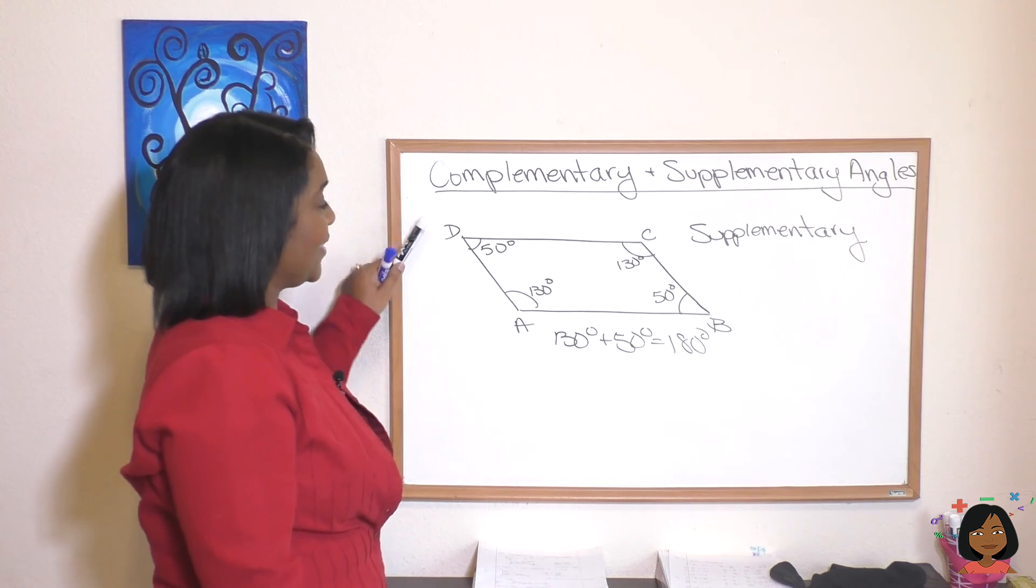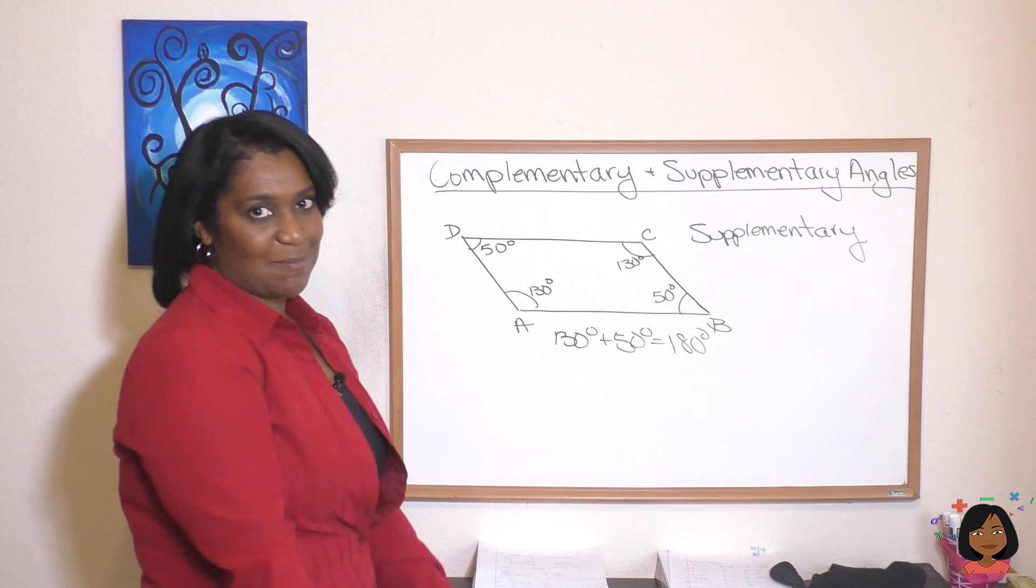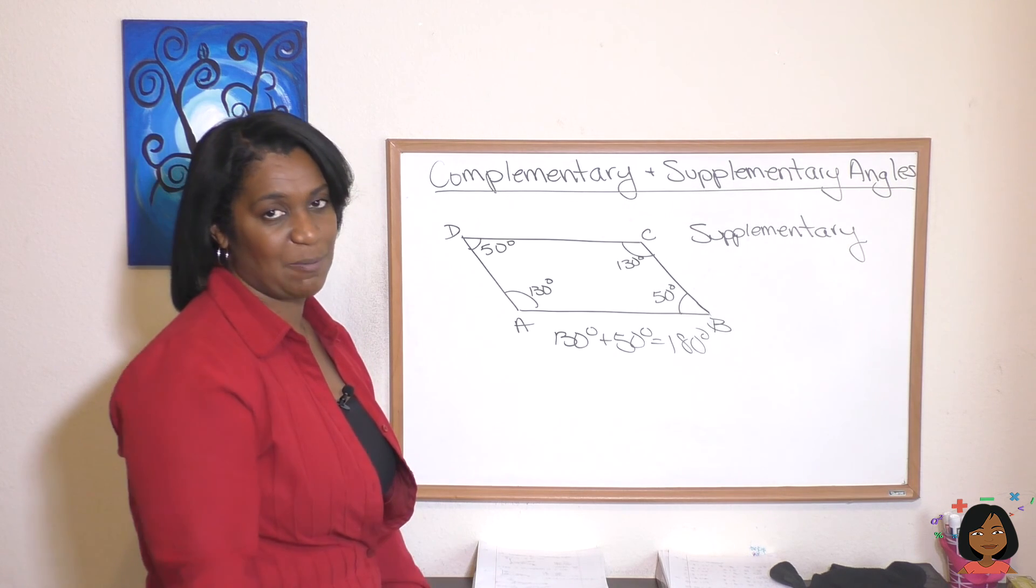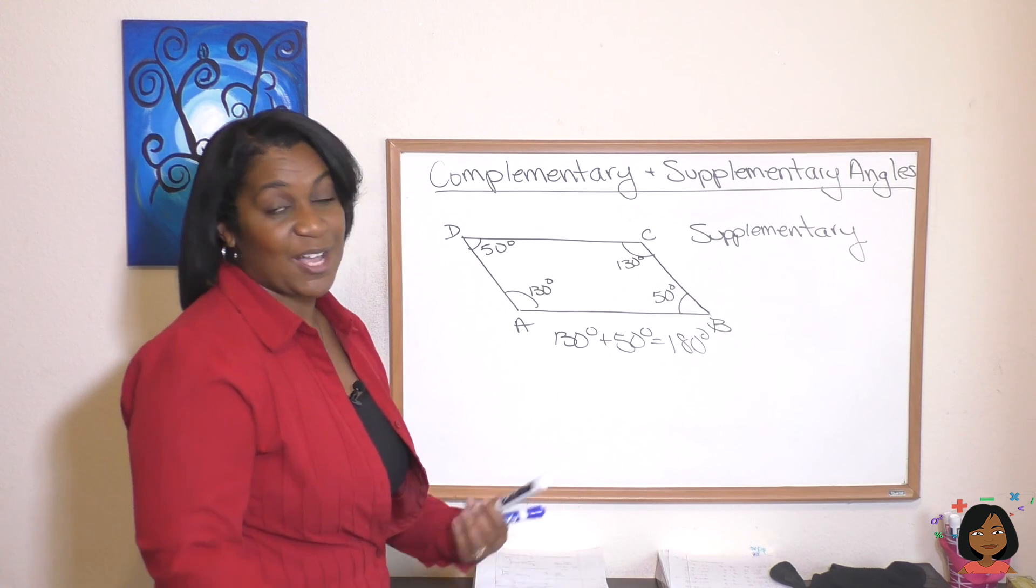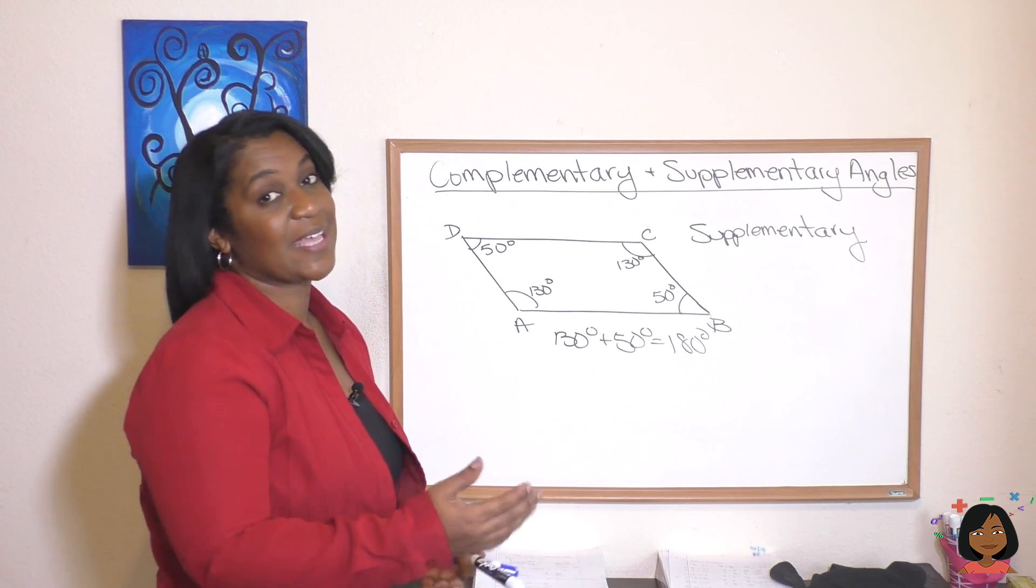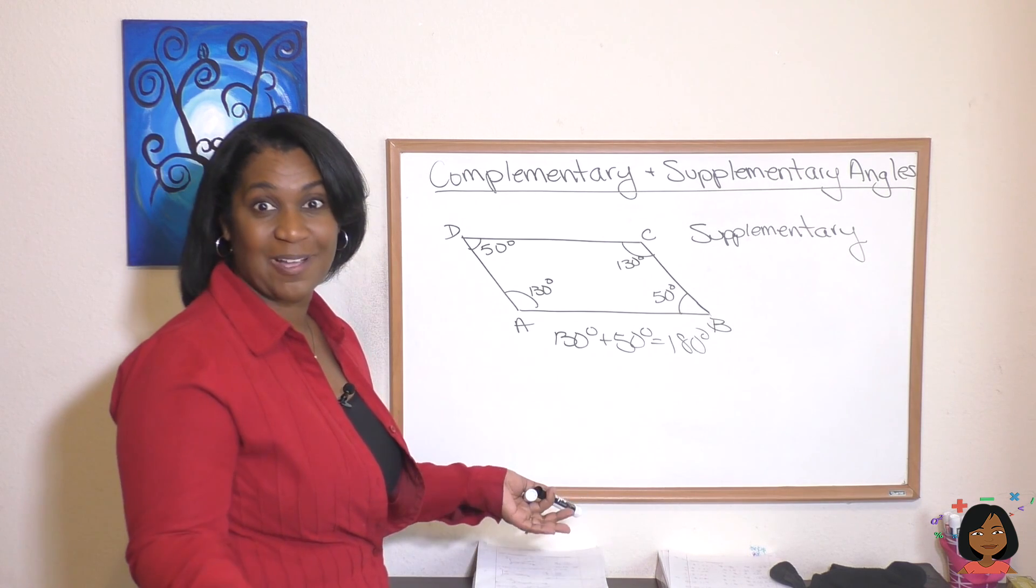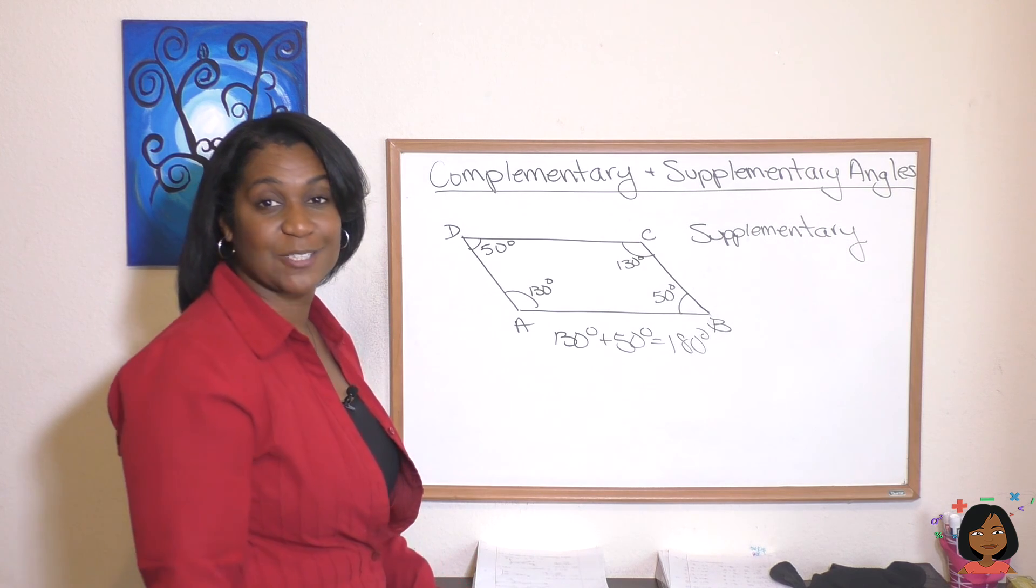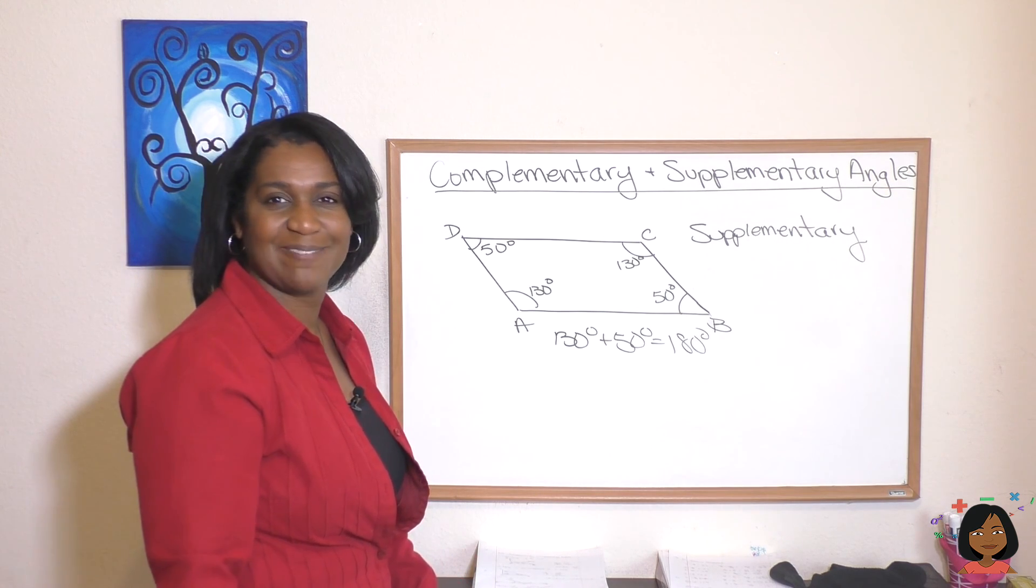And lastly, D and A add up to 180 degrees so they are supplementary. And that's it. Complementary means they add up to 90 degrees, supplementary means they add up to 180. Pretty quick lesson, okay? Try the practice problems. I'll see you next time. Take care, bye-bye.